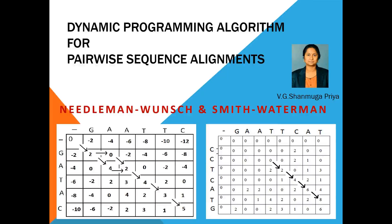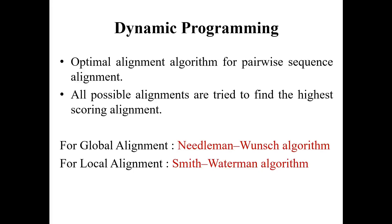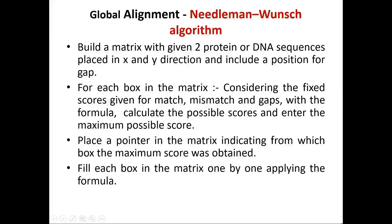Hello, this is VG Shanmuga Priya. Today we will be seeing about the dynamic programming algorithm for pairwise sequence alignments. Dynamic programming is an optimal alignment algorithm for pairwise sequence alignment where all possible alignments are tried to find the highest scoring alignment. The algorithm used for global alignment is the Needleman-Wunsch algorithm, and for local alignment it is the Smith-Waterman algorithm.